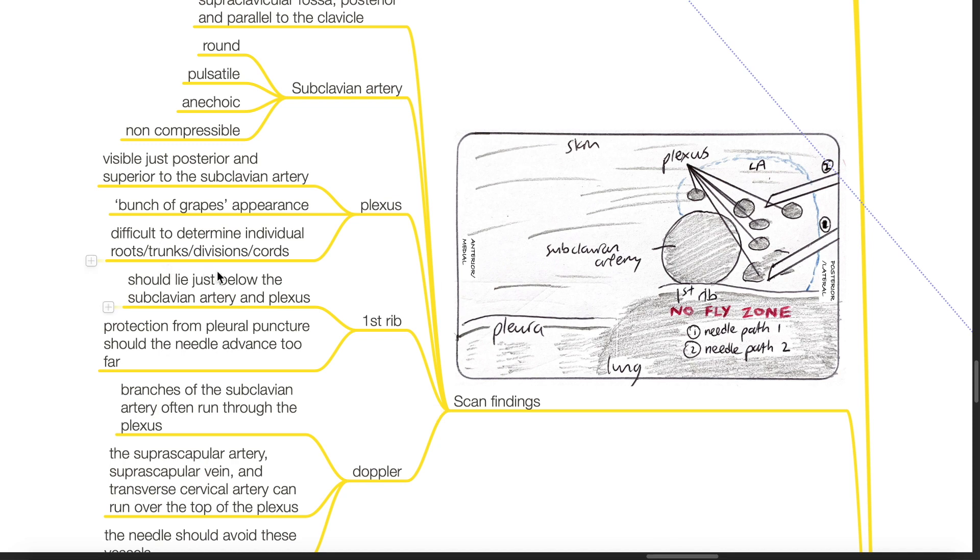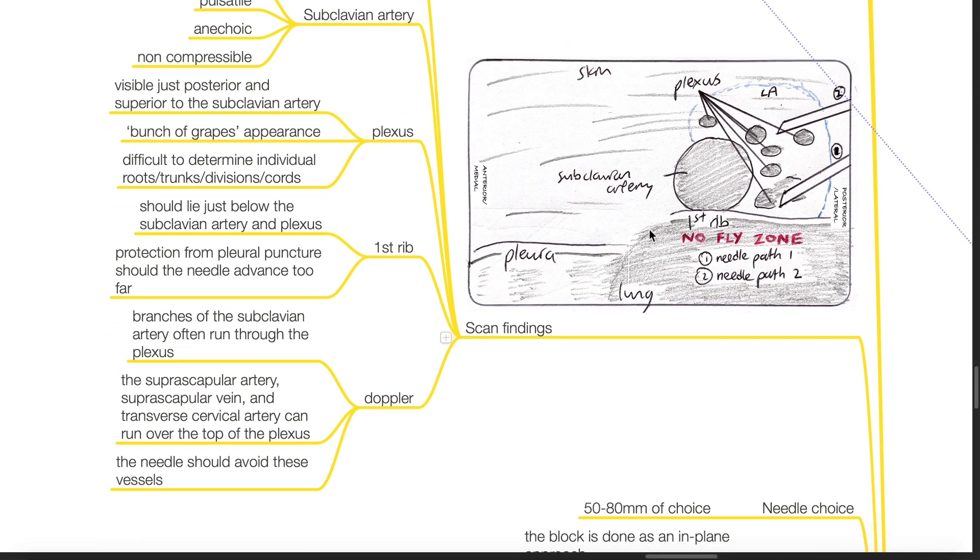It is difficult to determine the individual roots, trunks, divisions, or cords. The first rib should lie just below the subclavian artery and the plexus, and it provides protection from pleural puncture should the needle advance too far.